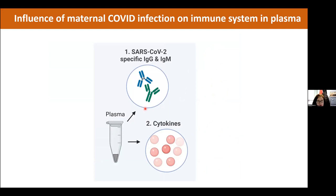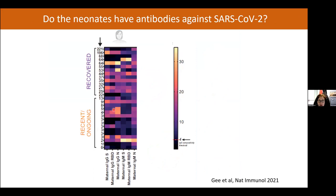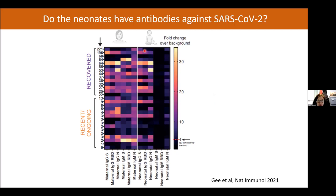Looking at plasma antibodies, we measured IgG and IgM specific to different SARS-CoV-2 antigens: spike protein, receptor-binding domain, and nucleocapsid. Mothers from both infected groups showed SARS-CoV-2-specific antibodies. In corresponding infants, IgG was present but IgM was not. This tells us the baby did not make its own antibodies — implying no vertical transmission — but that the mother successfully transferred SARS-CoV-2-specific IgG across the placenta to the infant.